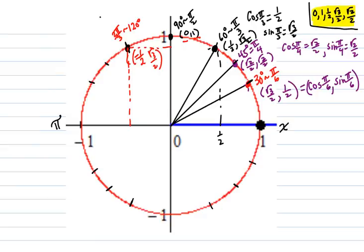This location is 135 degrees, coterminal to 3π/4. The coordinates of the point there: that's a π/4-type location, so it's going to be negative √2/2, because we're on the negative x side, and √2/2 because we're on the positive y part.